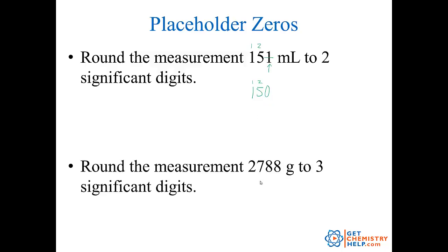How about 2788 rounded to three significant figures? We keep the first three: one, two, three. The first non-significant digit is an eight, so five or greater tells me to round up — I add one onto the last significant digit, so 278 becomes 279. But I can't just leave 279; I have to put a zero in that place, so it becomes 2790.